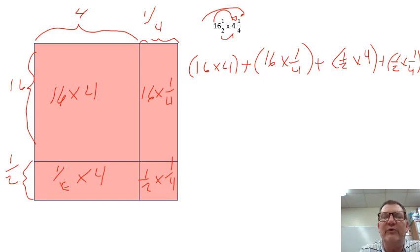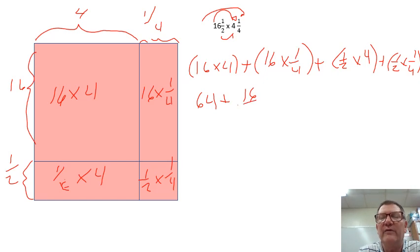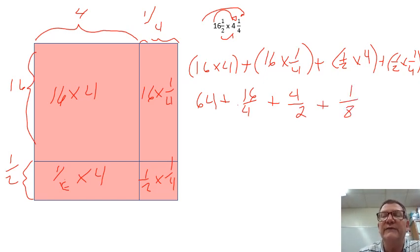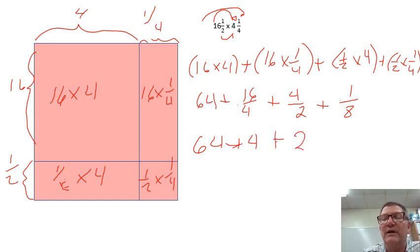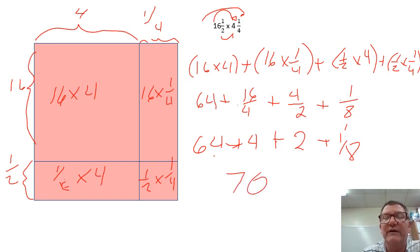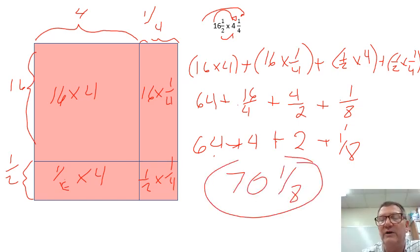Solving it: sixteen times four — four times ten is forty, four times six is twenty-four, so that's sixty-four. Plus sixteen-fourths, plus four-halves, plus one-eighth. Simplifying: sixteen-fourths equals four, four-halves equals two. So sixty-four plus four is sixty-eight, plus two is seventy, plus one-eighth. Our answer is seventy and one-eighth.